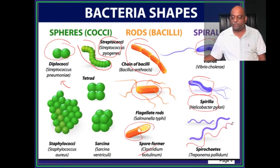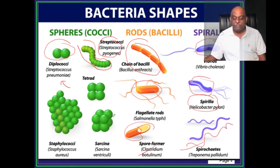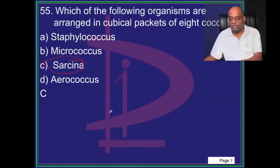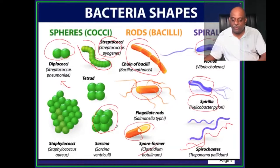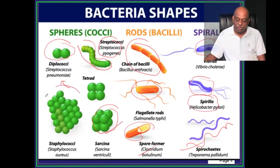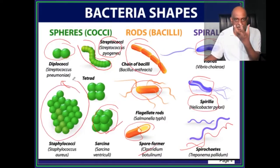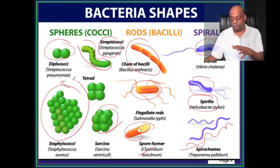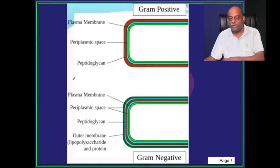And once more, a spiral shaped is Spirochete — Treponema pallidum. Sarcina is what the examiner is asking: cubical packets of 8 cocci. Staphylococci are like grapes — a bunch of grapes. So these are a few things that you need to be very sure about.